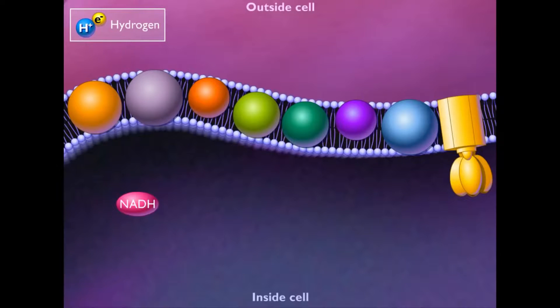The electron transport chain consists of a series of special electron carrier proteins that shuttle electrons from NADH to a terminal electron acceptor such as oxygen.